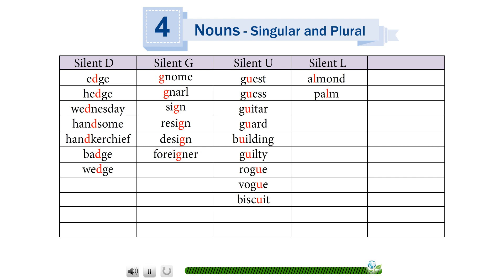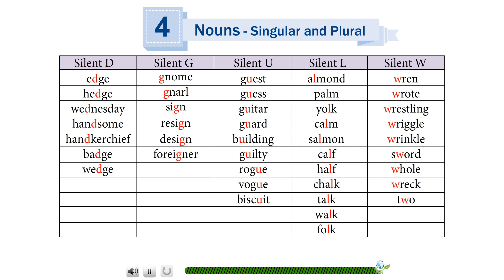Silent L: almond, palm, yolk, calm, salmon, calf, half, chalk, talk, walk, folk. Silent W: wren, root, wrestling, wriggle, wrinkle, sword, whole, wreck, to wrap, wrong, thick, sons